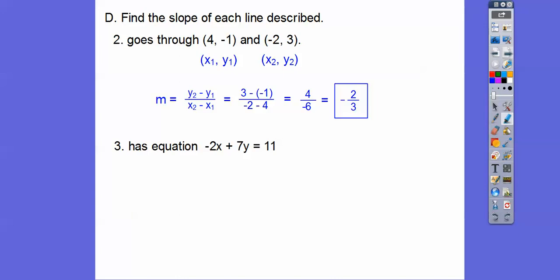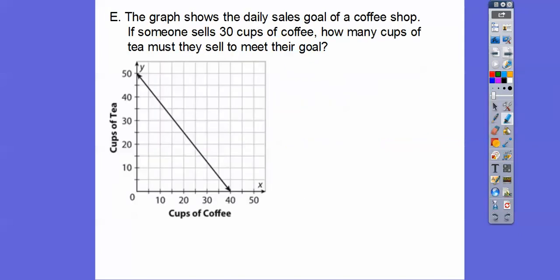If it has an equation like this, it's in standard form. So it's opposite the number in front of x over the number in front of y. So here it's going to be opposite that negative 2 over 7, which is a positive 2 sevenths.